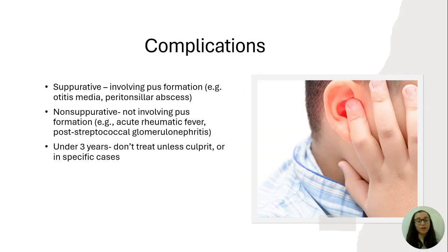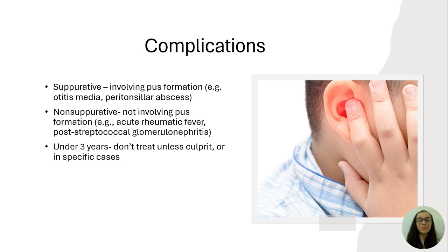In terms of complications from untreated strep, we have suppurative complications — involving pus formation — like peritonsillar abscess and otitis media (an ear infection). We also have non-suppurative complications like acute rheumatic fever, an inflammatory condition affecting the heart, joints, and skin, which is quite severe. There's also post-streptococcal glomerulonephritis, a rapid decrease in kidney function. These are why you want to treat strep. Importantly, acute rheumatic fever isn't really seen in children under three, so we generally don't treat kids under three for strep, as they're not at the same risk for cardiac complications.